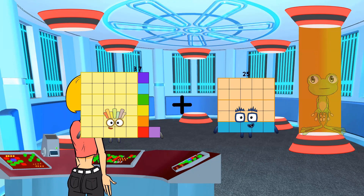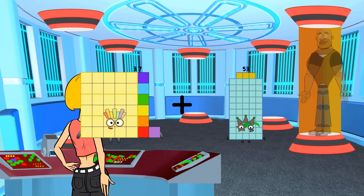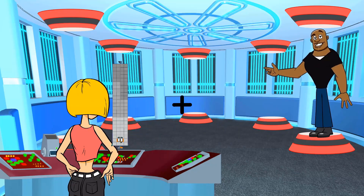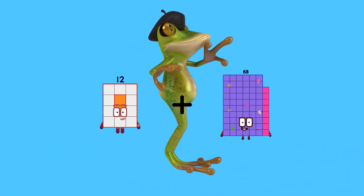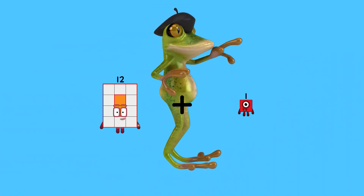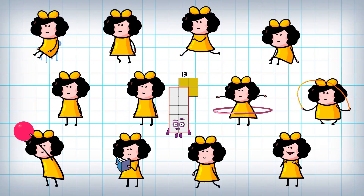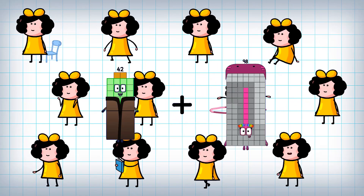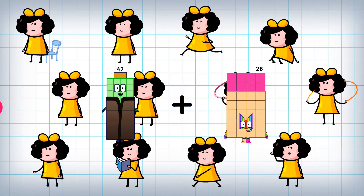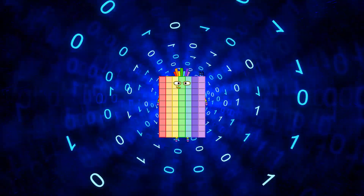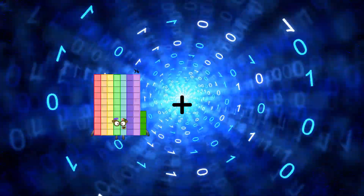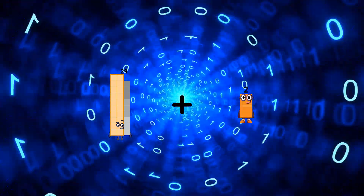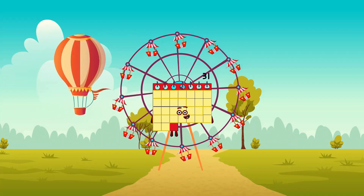37 plus 53 equals 90. 12 plus 1 equals 13. 42 plus 28 equals 70. 29 plus 2 equals 31.